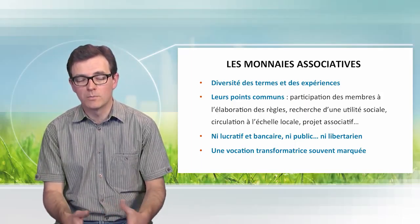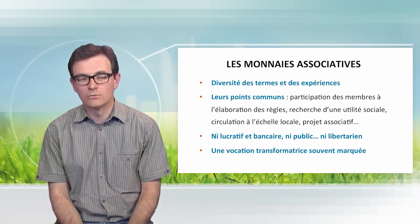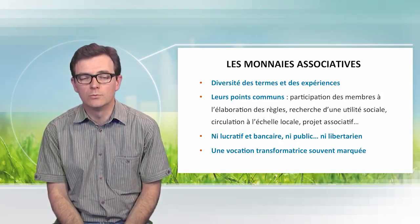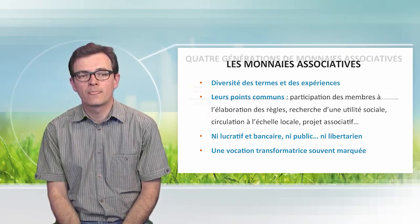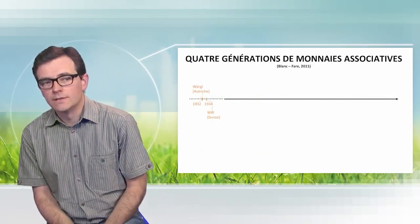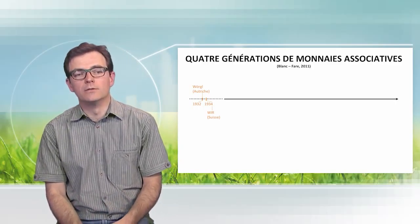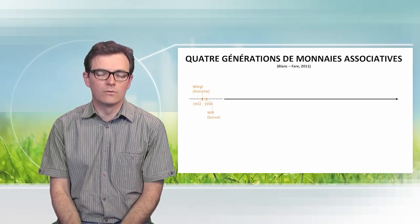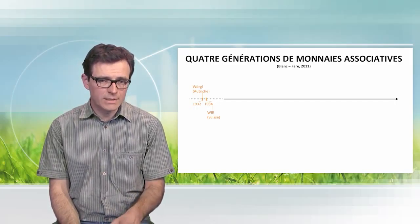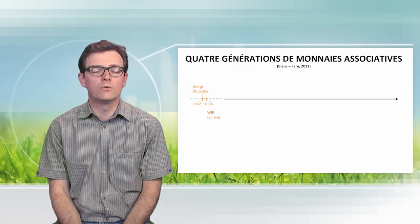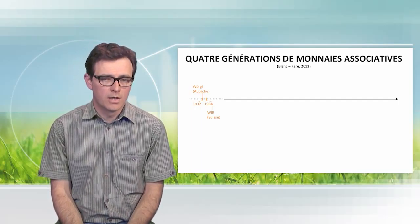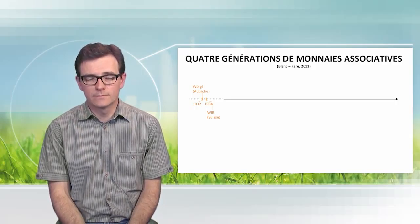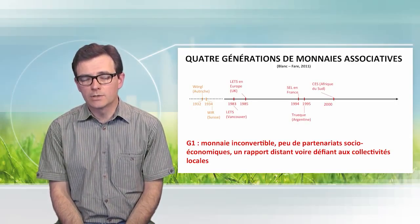Behind the associative currencies, there is usually the vocation to make a transformation. These currencies are trying to allow a new model of society to emerge. In the end, what it comes down to is trying to do something that we could observe in social economy in the 18th century. To help you understand what local or associative currencies are, I would like to show you the chronology.